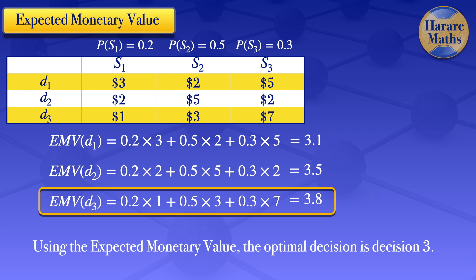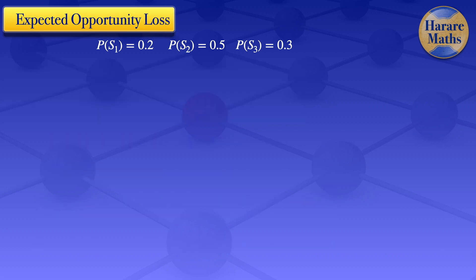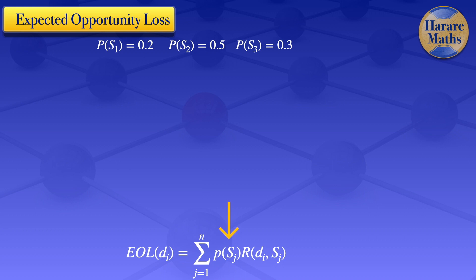I now move on to the second question, using the expected opportunity loss to find the optimal decision. The formula for expected opportunity loss for decision Di is the summation from j equals 1 up to N of P(Sj) times R(Di, Sj), where P(Sj) is the probability of state of nature j and R(Di, Sj) is the regret under decision i, state of nature Sj.